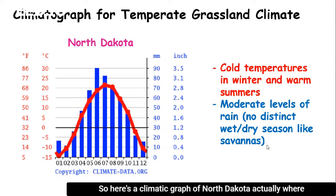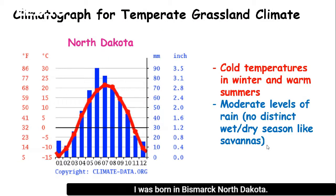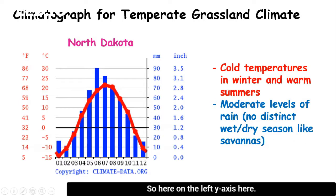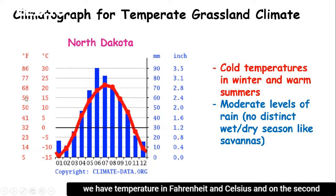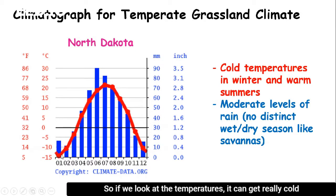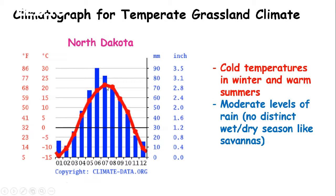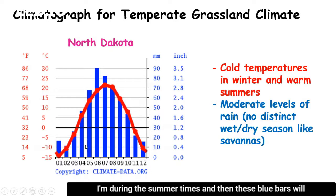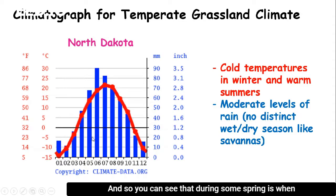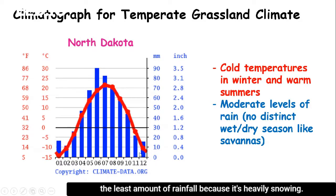Here's a climatograph of North Dakota — actually where I'm from, I was born in Bismarck, North Dakota. On the left y-axis we have temperature in Fahrenheit and Celsius, and on the second y-axis we have precipitation in millimeters and inches. Looking at the temperatures, it can get really cold, down to about negative 15 degrees Celsius, all the way up to 60, 70, 80, 90 degrees during the summer. The blue bars indicate different precipitation levels in millimeters. You can see that during some spring months is when they receive the most rainfall, and in wintertime they receive the least amount because it's heavily snowing.